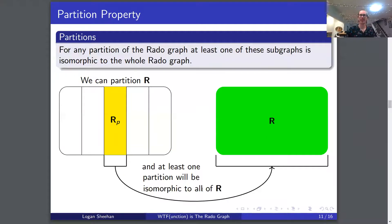This is where we get into the bigger robustness property, the partition property. It states: for any partition of the Rado graph, at least one of these subgraphs is isomorphic to the whole Rado graph. It needs to be said that it is a finite number of partitions. From our picture, let's say we partitioned R into five disjoint sets. Well, this R p will still be isomorphic to R, which means it'll still have the extension property. I think that is really cool.